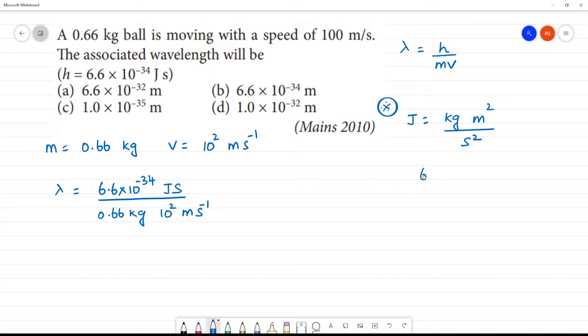This is 6.6 into 10 to the power minus 34. The denominator is 0.66 into 10 to the power minus 33.